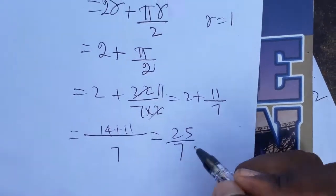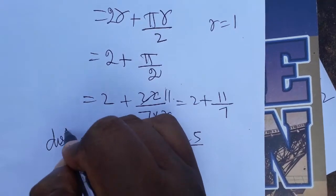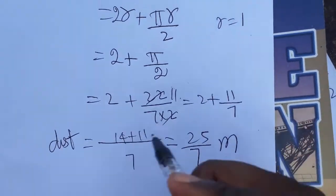So this is the distance. Distance is the actual length of the path. Thank you.